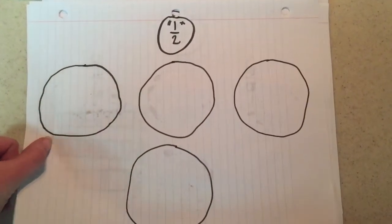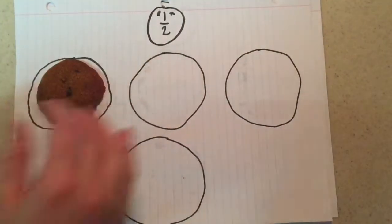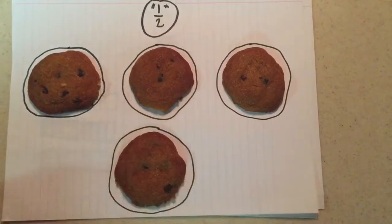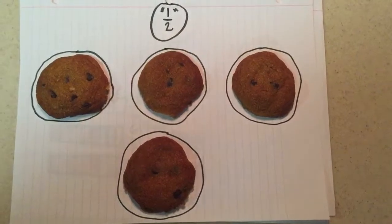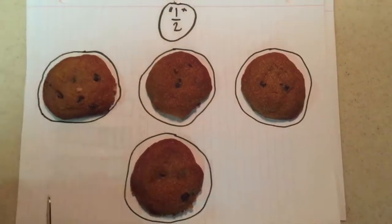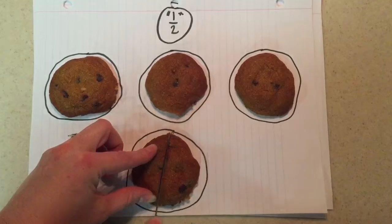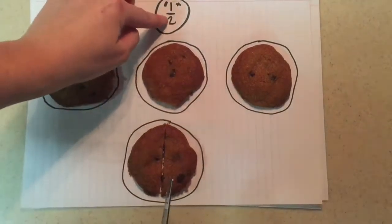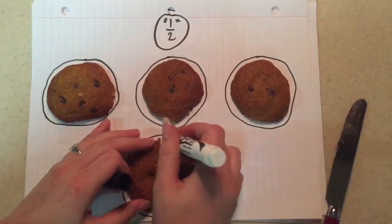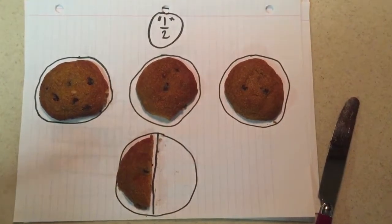We are going to look at the fraction one-half using chocolate chip cookies. I tried to trace these and notice that the circles are a little bit bigger than the cookies, but that's okay. So we have, this is gonna be our one-half. So I'm just gonna cut this right down the middle because there are two pieces. And if I eat this half, that only leaves one-half.